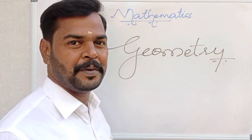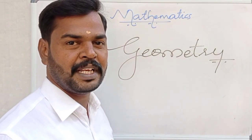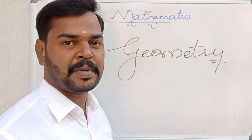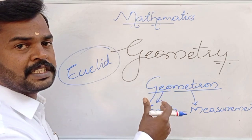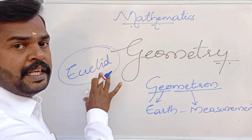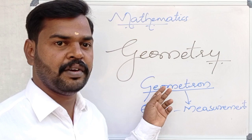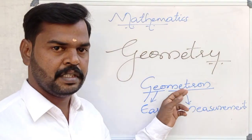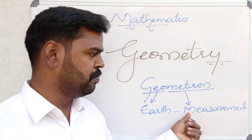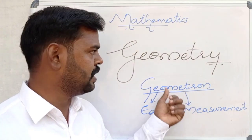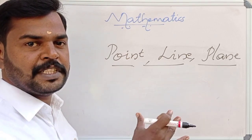Today's class we are going to discuss the topic geometry. Geometry is one of the branches in mathematics, like statistics, algebra, and coordinate geometry. This branch, geometry, was first discussed by Euclid. Euclid is known as the father of geometry. Geometry is the English equivalent of the Greek word 'geometron' — geo meaning earth, while metron meaning measurement. So geometry means earth measurement.